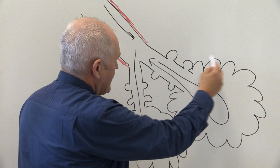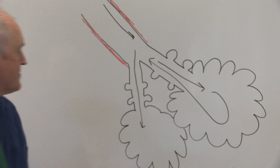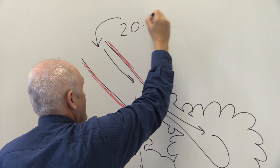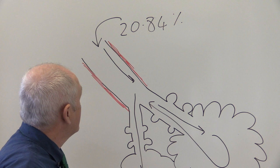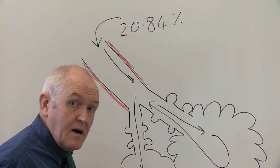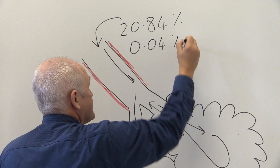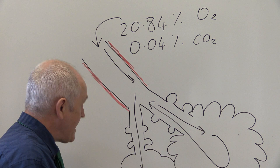The air going in is going to be relatively high in oxygen — about 20.84%, just under 21% oxygen in fresh air — and the carbon dioxide in fresh air is going to be relatively low. So fresh air is high in oxygen and low in carbon dioxide.